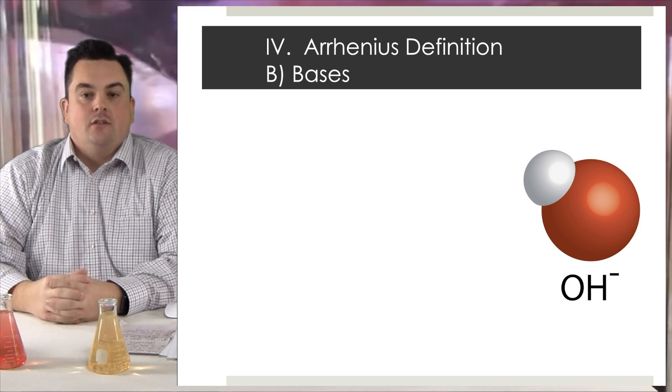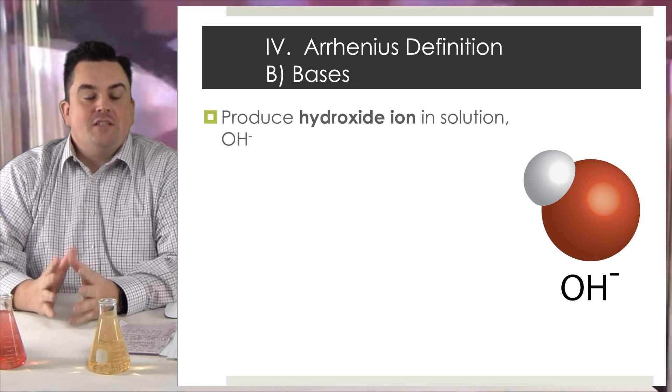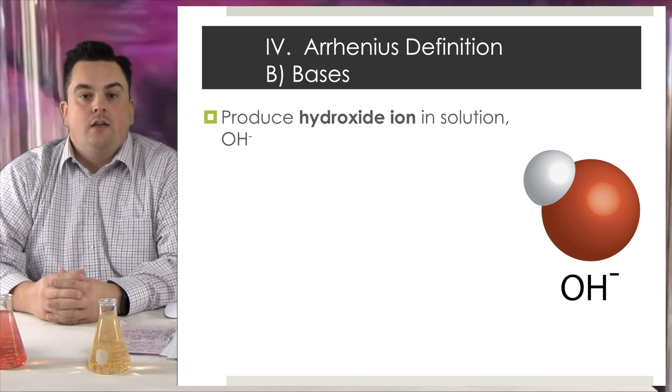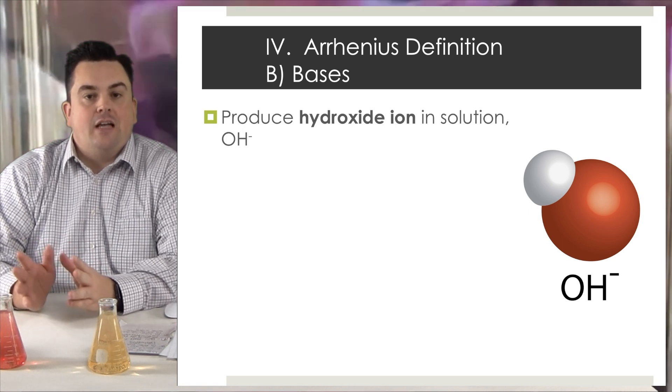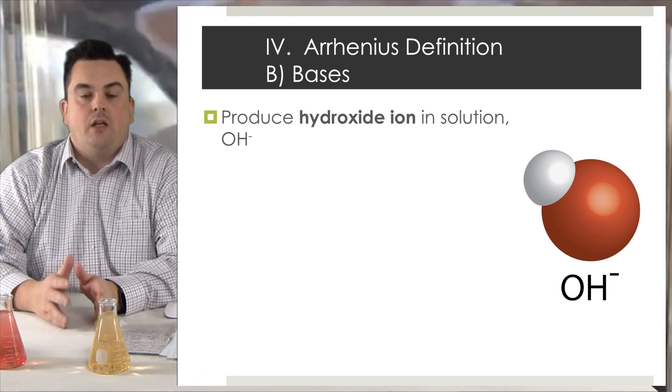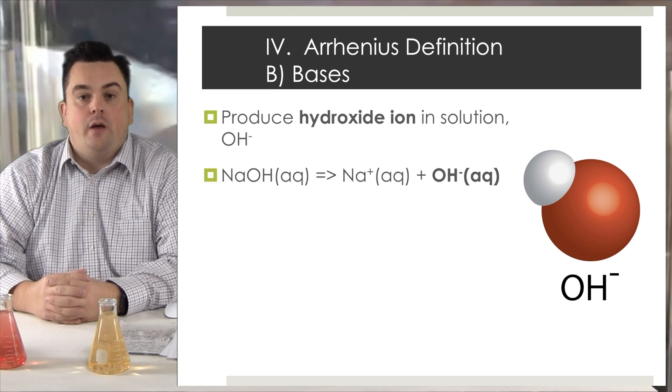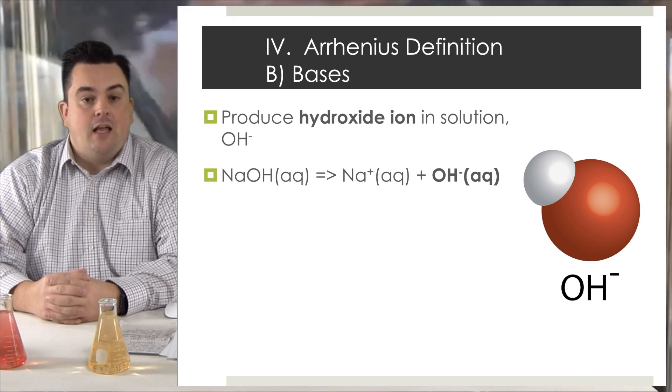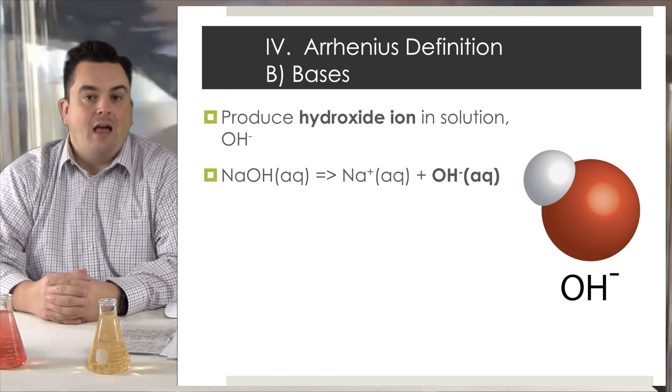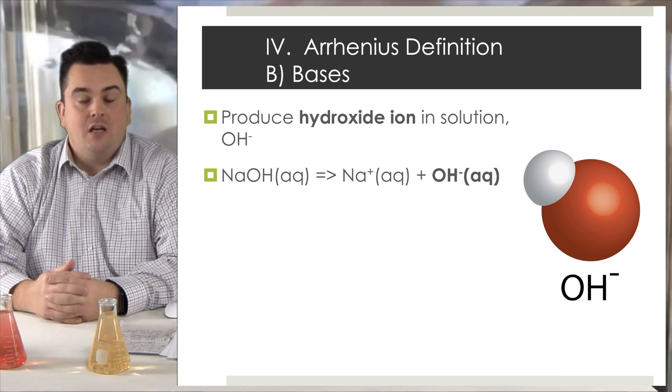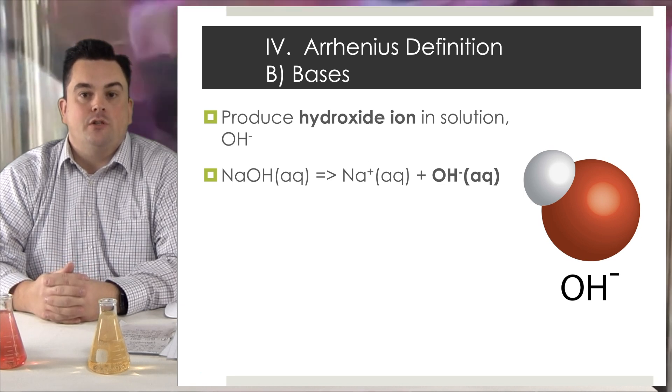Arrhenius definition for bases. Bases produce hydroxide ions in solution, OH minus. Now please, don't confuse hydroxide with hydronium. They're very different. Now looking at our example, we have NaOH aqueous, which will yield Na plus aqueous and OH minus aqueous. Now we can then say NaOH is a base because it produces OH minus in solution.